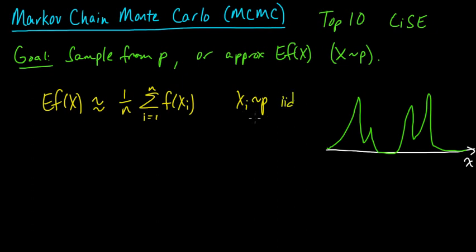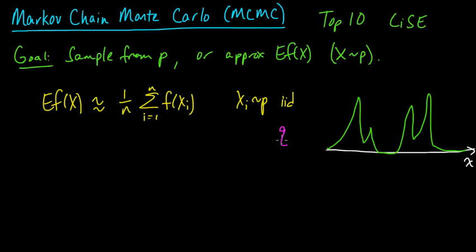The first problem that might arise is that P might be way too complicated to actually sample from. We talked about another way to get around that: importance sampling, where you have some proposal distribution Q and correct for using the wrong distribution. Or you could do rejection sampling as another option.